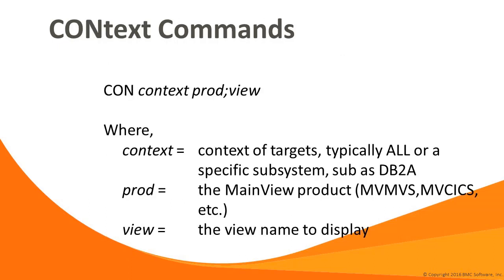The context command is the primary way to control which targets are to provide data to the view. Most typically the context command is issued with one operand — either all, a subsystem name, or a custom context defined at the site.